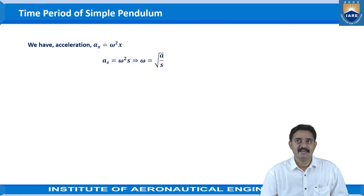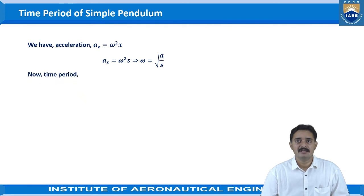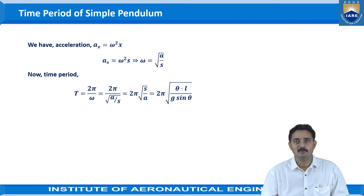We have the acceleration a_x is equal to omega square x. From this if we write a_s is equal to omega square s, which implies omega is equal to under root a by s, where a is the acceleration and s is the displacement. Now, the time period can be obtained as T is equal to 2 pi by omega, that is equal to 2 pi by under root a by s.